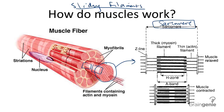The thick black line in the sarcomere is called myosin. It is a protein filament. And the thin black line is called actin. It's another protein filament.